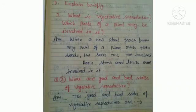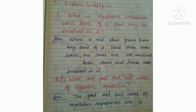Question number D, explain briefly. First question: what is vegetative reproduction? Which parts of a plant may be involved in it? Answer: when a new plant grows from any part of a plant other than seeds, and the sexes are not involved, that is called vegetative reproduction. Roots, stems, and leaves are involved in it.